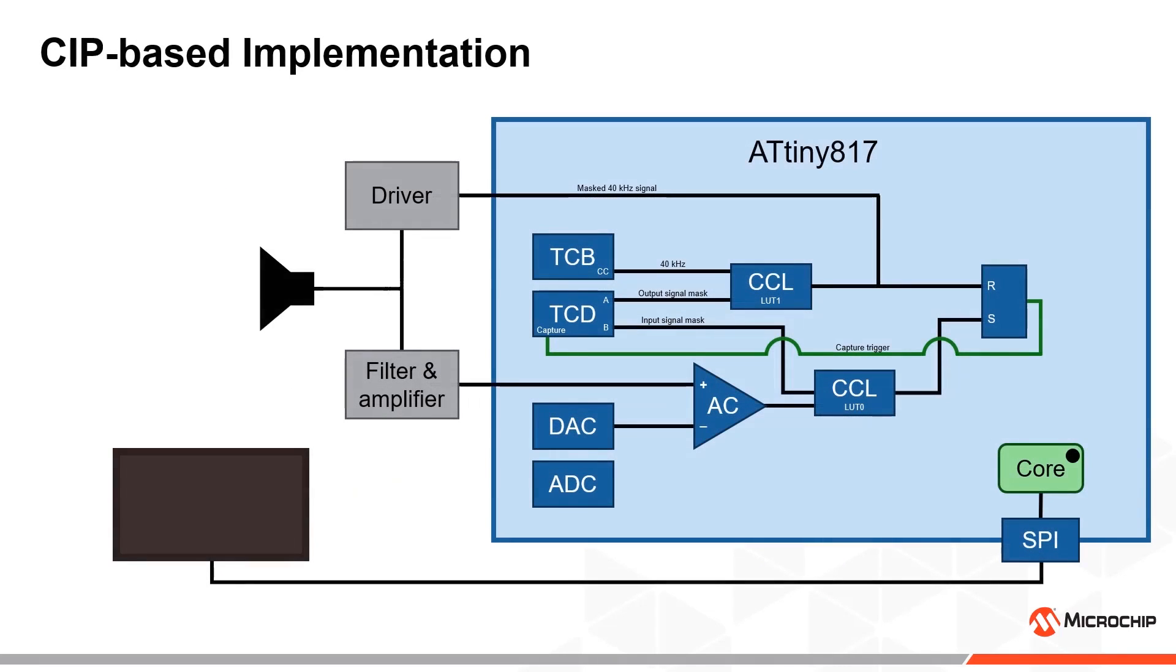Let us now take a look at how we can use interrupts, the event system, and the core independent peripherals to make a better and more deterministic implementation. This schematic shows how everything is connected in our example, and we will walk through how it works step by step.